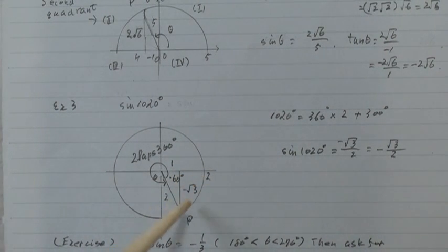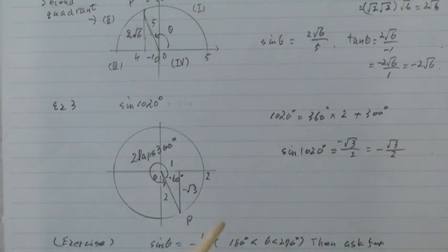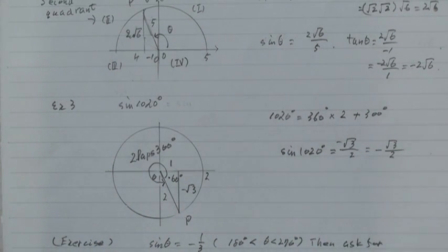Y coordinate equals minus root 3. Then sine 1020 degrees equals y over r. Then this is.